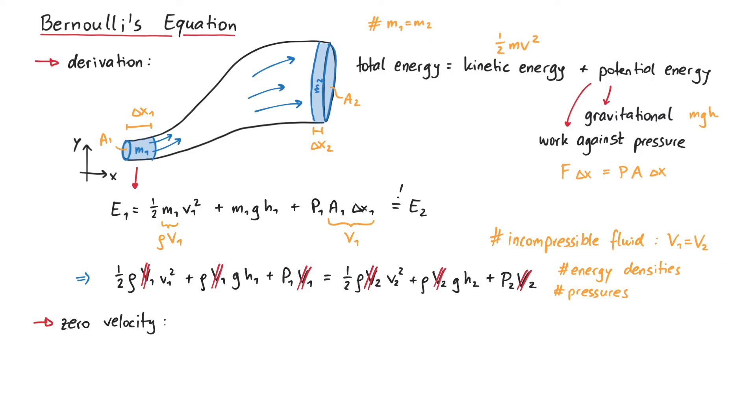Note that for zero velocity, the equation gets reduced to the hydrostatic equation. This makes sense, since the static in hydrostatic means that nothing is moving. A more general way to write down Bernoulli's equation is to claim that these three contributions here are constant for all points in an ideal fluid.